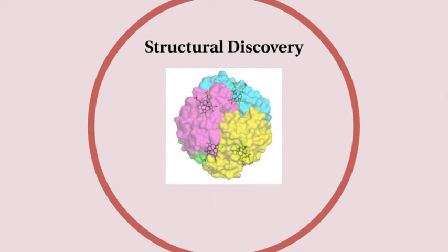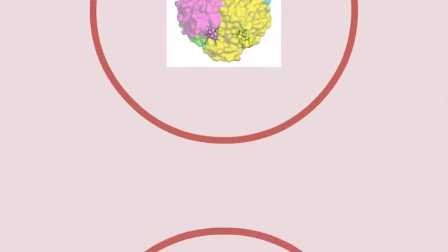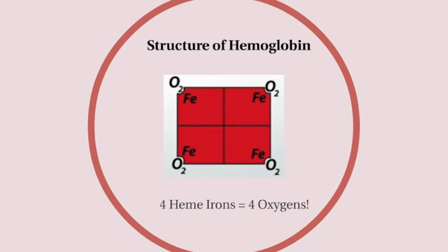Taking a closer look at the hemoglobin structure, you can see that there are four subunits, shown here by the different colors in the schematic illustration of hemoglobin. Every subunit has an iron atom in the middle, which is what binds to an oxygen atom. Therefore, one hemoglobin molecule itself is able to carry four oxygen molecules.